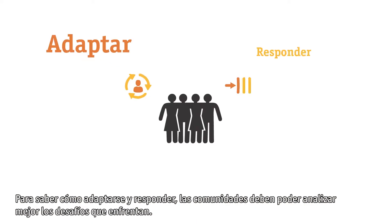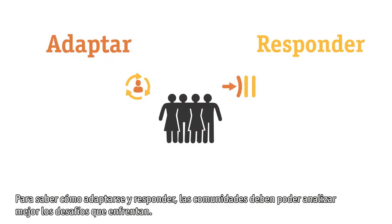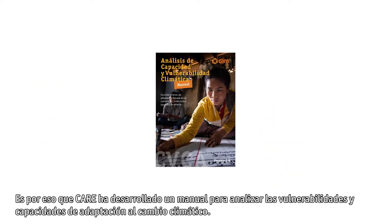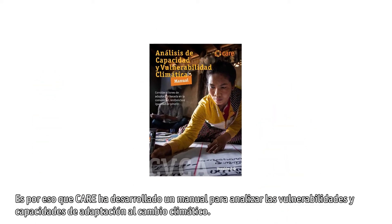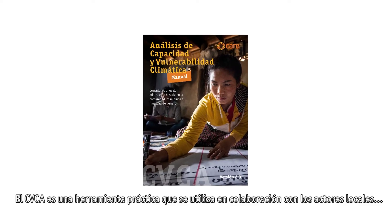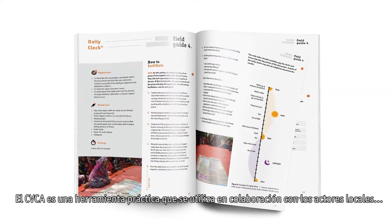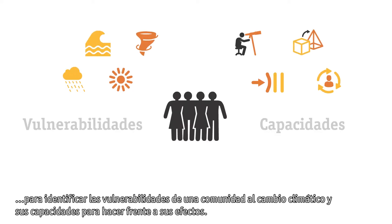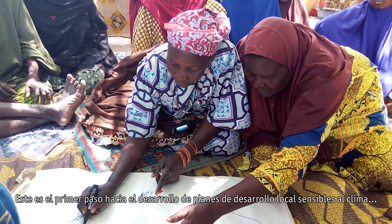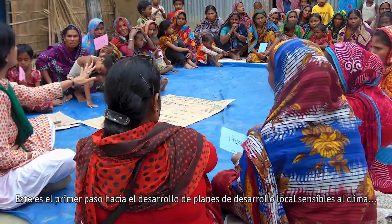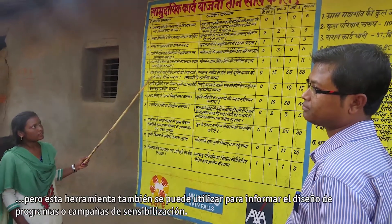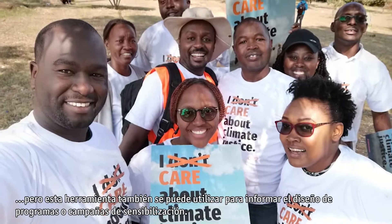To know how to adapt and respond, communities must understand the challenges they are up against. That's why CARE made the Climate Vulnerability and Capacity Analysis. The CVCA is a practical tool used in collaboration with local stakeholders to identify a community's vulnerabilities to climate change and capacities to deal with its effects. It's the first step towards developing climate-sensitive local development plans, but it can also be used to inform program designs or awareness and advocacy campaigns.